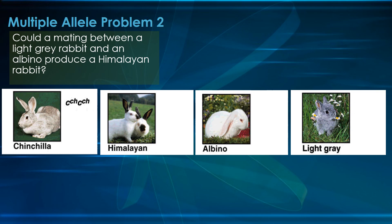It is by incomplete dominance. The color for chinchilla is C^CH C^CH — that's the genetics for a chinchilla rabbit. For the Himalayan, it's C^H C^H or C^H C. The albino is just two little c's — no color, that's why it's white. The light gray can be C^CH C^CH or C^CH C.